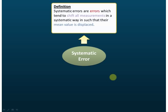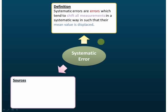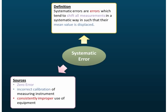In conclusion, you need to know the definition: systematic errors are errors which tend to shift all measurements in a systematic way such that their mean value is displaced. You also need to know the sources — zero error, incorrect calibrations, and consistently improper use of equipment.